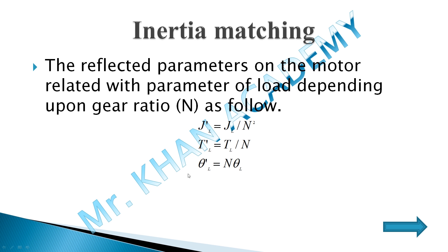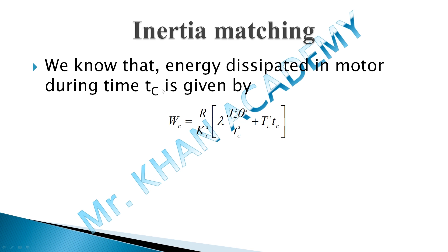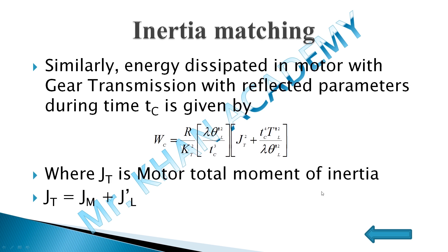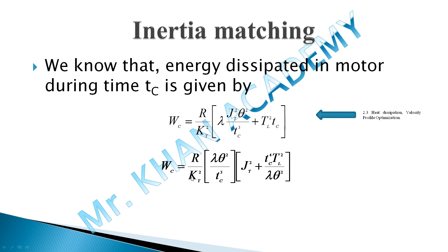The relationship between reflected parameters and load-side parameters was already discussed in 2.3. Heat dissipation in a DC motor can be calculated with the formula derived there. Taking λθ² and tc³ as common, and simplifying, we get a term with tc⁴ divided by λθ². This is for the DC motor without gear. With gear transmission using reflected parameters, the formula is similar but uses the reflected parameters θ'l and T'l.